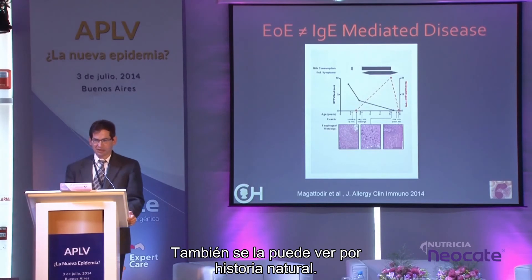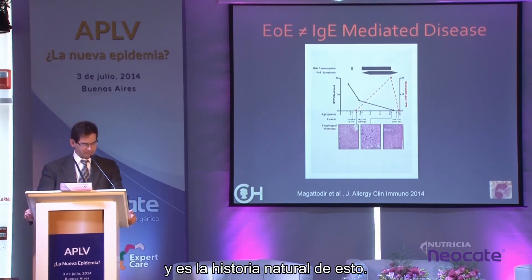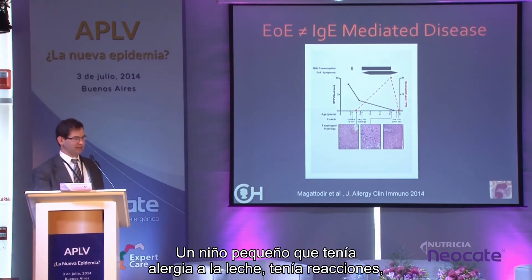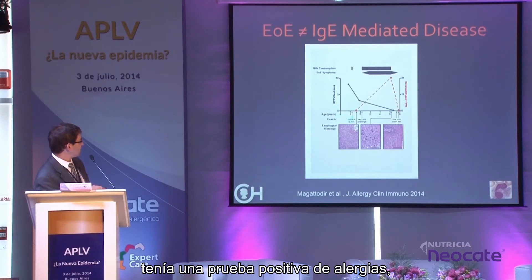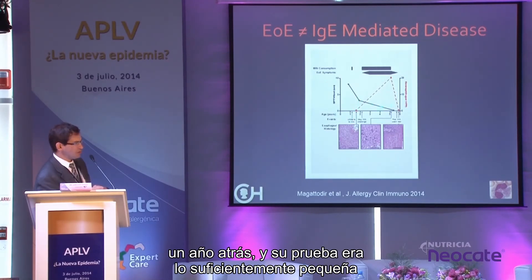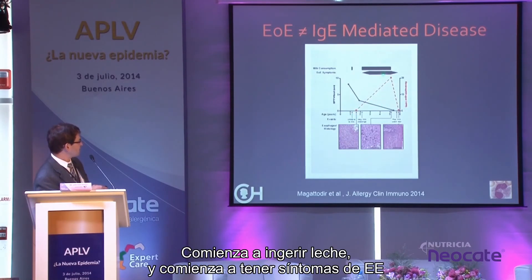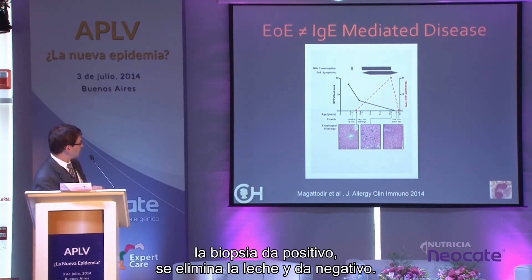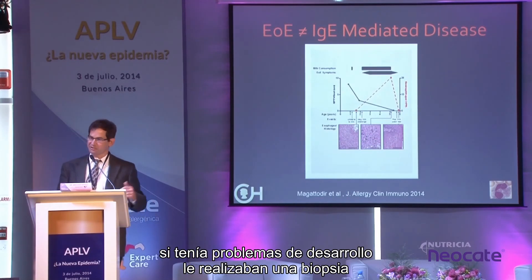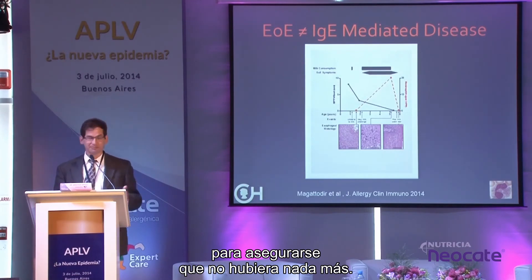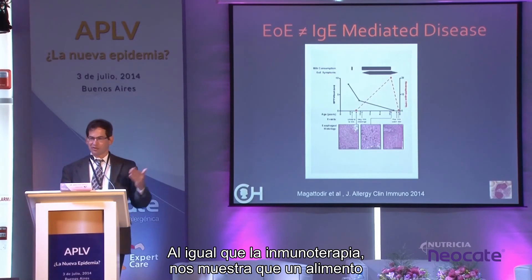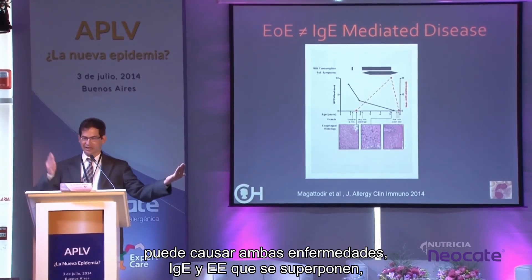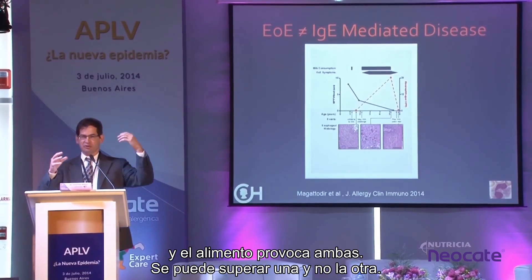Natural history data shows the same phenomenon. We published a case of a child with milk allergy who had a positive skin test, passed a food challenge at a year and a half, started eating milk, then began having EOE symptoms and had a positive biopsy at age five — with a now-negative skin test. Removing milk resolved the EOE. This patient had previously had a normal biopsy, confirming the timeline. It demonstrates that one food can cause both IgE-mediated allergy and EOE, and you can outgrow one without outgrowing the other.